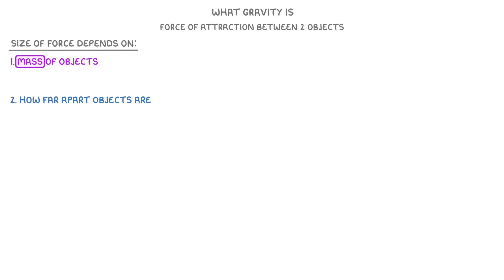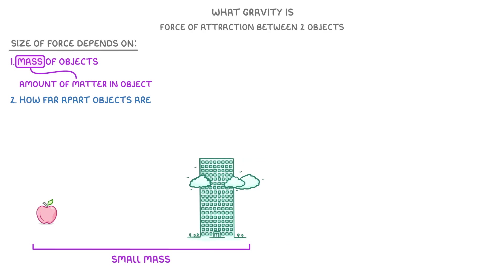Remember, the term mass here just means the amount of matter in an object. For objects that have a small mass, like apples or even buildings, the gravitational force of attraction is so tiny it's as though it doesn't even exist.